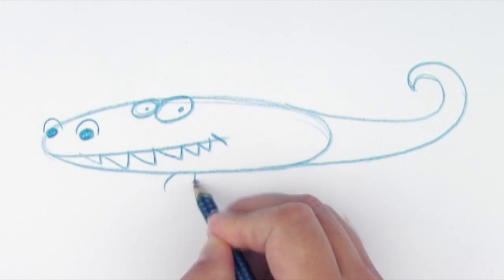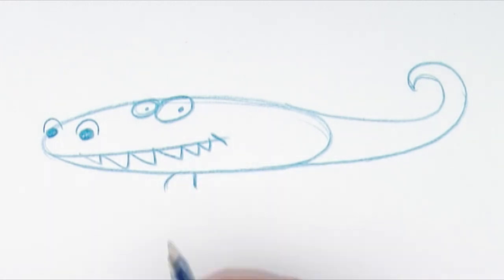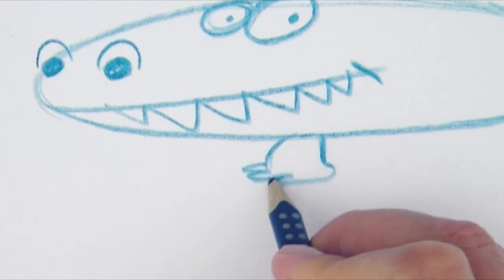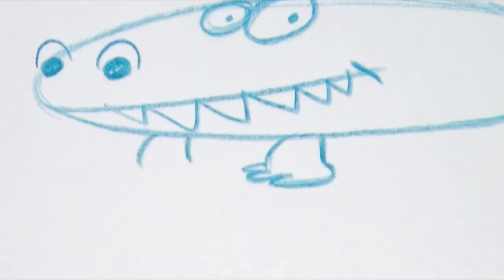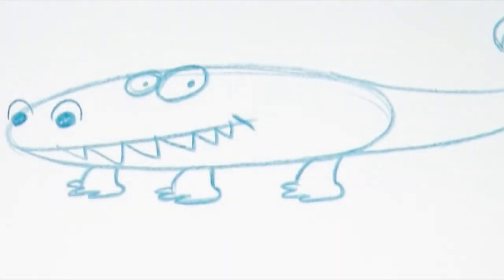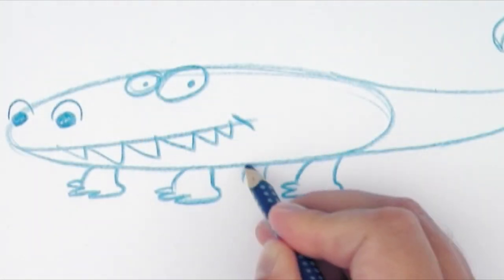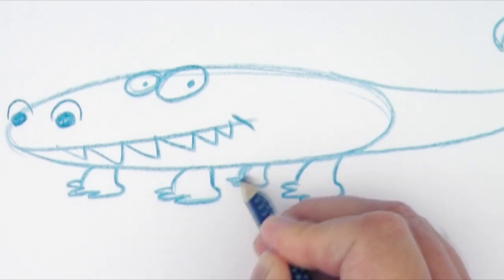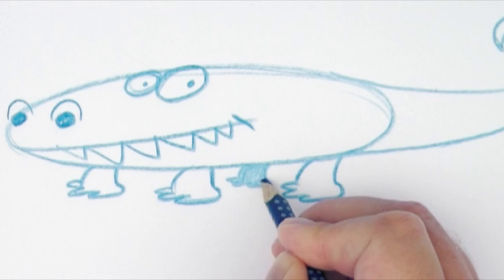Then we are at the legs. I draw two short lines straight down and then a little foot with three toes at the end. Then I draw another one just the same. That was the front legs. The hind legs are exactly the same. The last leg is behind the body of the crocodile. So I'll add some shadow to it.